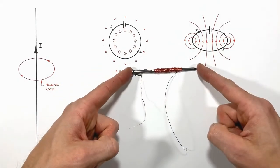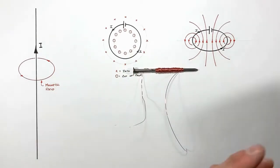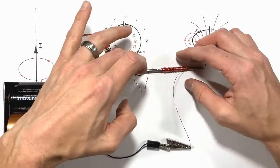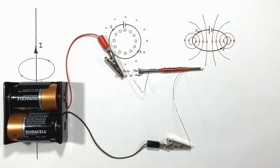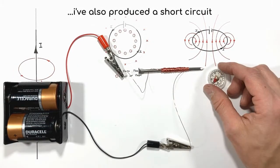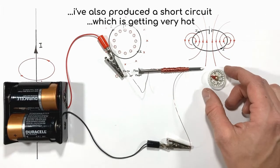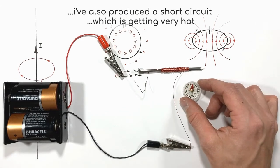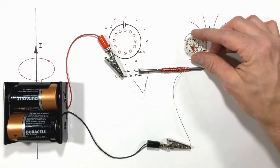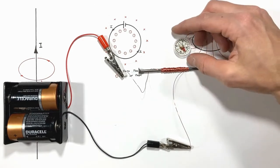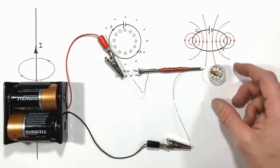If I take this electromagnet and hook it up to a battery, I produce a magnetic field. You'll see just like with a permanent magnet, no matter where I hold this compass around my electromagnet, the compass is always going to align with the magnetic field.